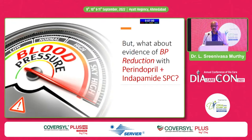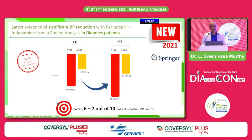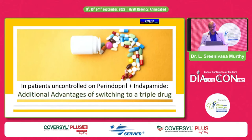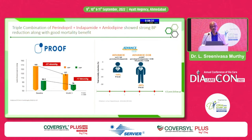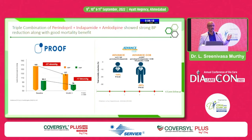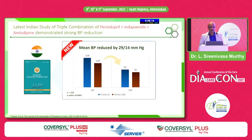A 2021 pooled analysis publication shows significant BP reduction with the perindopril-indapamide combination in diabetic patients — both systolic and diastolic BP reduction. For patients uncontrolled on perindopril-indapamide, there is additional advantage of switching to a triple drug combination. The synergistic triple combination of perindopril, indapamide, and amlodipine clearly shows strong BP reduction with good mortality benefit — demonstrated in the PROOF study and the PNE study, with reductions of 37 and 17 mmHg in systolic and diastolic BP respectively.